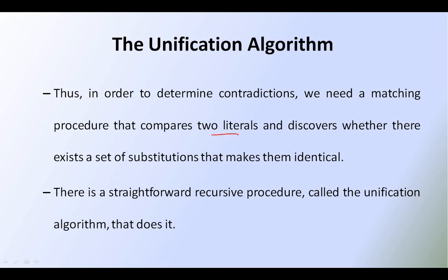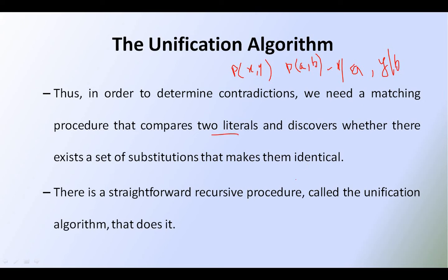Some literals are identical. For example, P of X comma Y and P of A comma B — contradiction is not possible here, but substitution is possible. We can substitute X by A and Y by B. One more thing to remember regarding the unification algorithm: it is also called a recursive procedure, whereas the resolution is an iterative process. It is a straightforward recursive procedure.